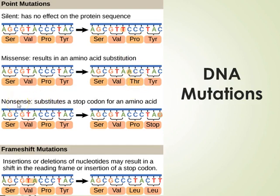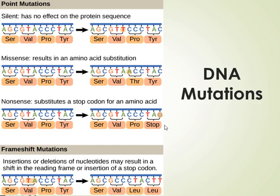A nonsense point mutation involves the same idea — a point mutation occurs. In this case, TAC was replicated as TAG — a G instead of C. But TAG is a stop codon: it stops the transcription process, which completely stops the building of the protein. This means you end up with a shortened protein, which will not be the same protein as initially intended. So these are three different results of a point mutation: silent, missense, and nonsense.